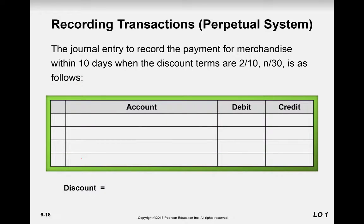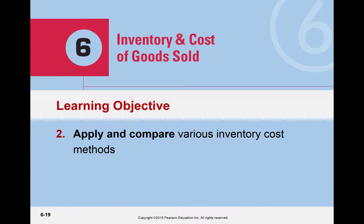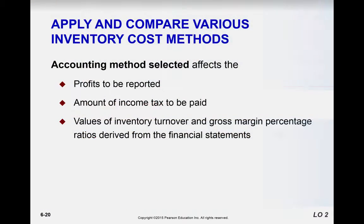To record payment taking a 10-day discount — under terms 2/10 net 30, a 2% discount if paid within 10 days, otherwise full amount due in 30 days — debit accounts payable for the full $1,000 to remove it, credit inventory for the $20 discount (2% of $1,000) to reduce the purchase cost, and credit cash for $980, since we paid within the 10-day window and took advantage of the discount.